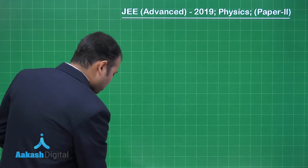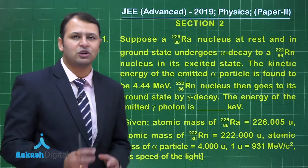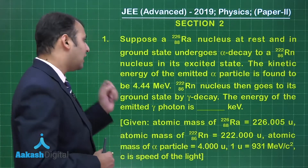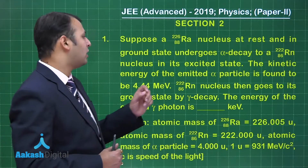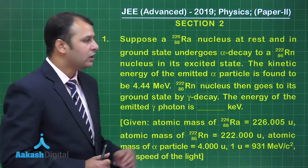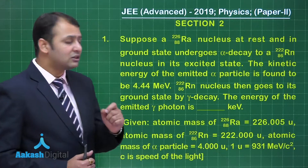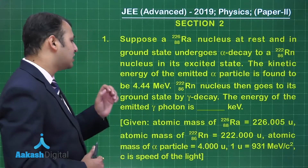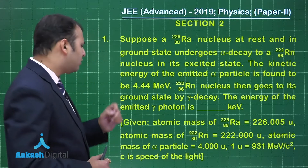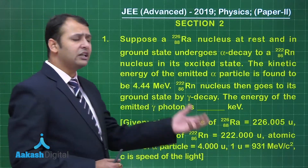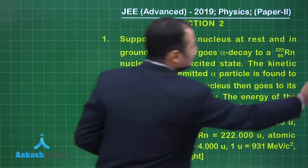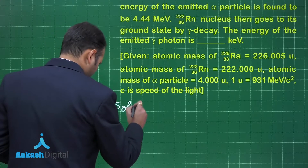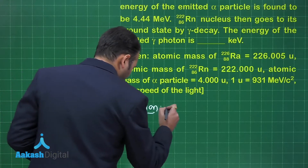Let's take the next question of section 2. The first question belongs to chapter Atoms and Nucleus. Suppose a radium nucleus at rest and in ground state undergoes alpha decay to form a radon nucleus in its excited state. The kinetic energy of the emitted alpha particle is found to be 4.44 MeV. This radon nucleus then goes to its ground state by gamma decay. We have to find the energy of the emitted gamma photon in kilo electron volts.